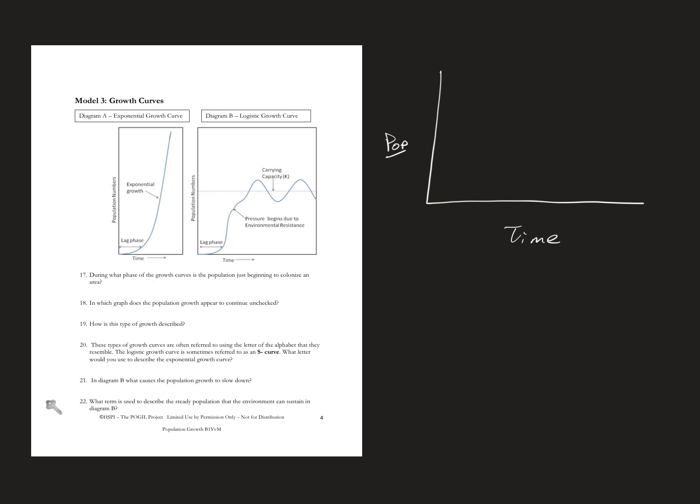And what happens over time is you start off with a small population. Since the population's small, there's plenty of food compared to the population, plenty of land, plenty of water, not as many predators. And so what happens is that you get population growth.